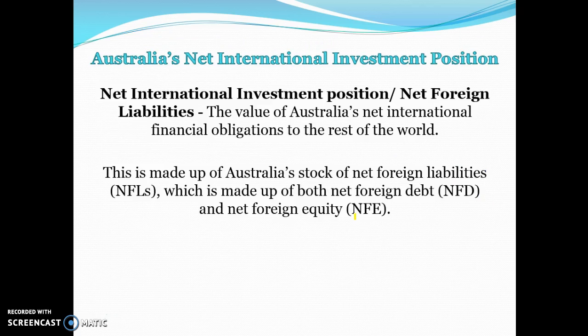The term net international investment position is the total net foreign liability — basically our net obligation to the rest of the world. It represents what foreigners have invested in Australia minus what we've lent to the rest of the world and our investments overseas.